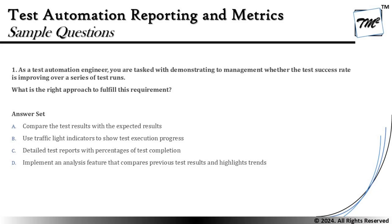To get started, the very first question from chapter 6 says: as a test automation engineer, you are tasked with demonstrating to management whether the test success rate is improving over a series of test runs. What is the right approach to fulfill this requirement?